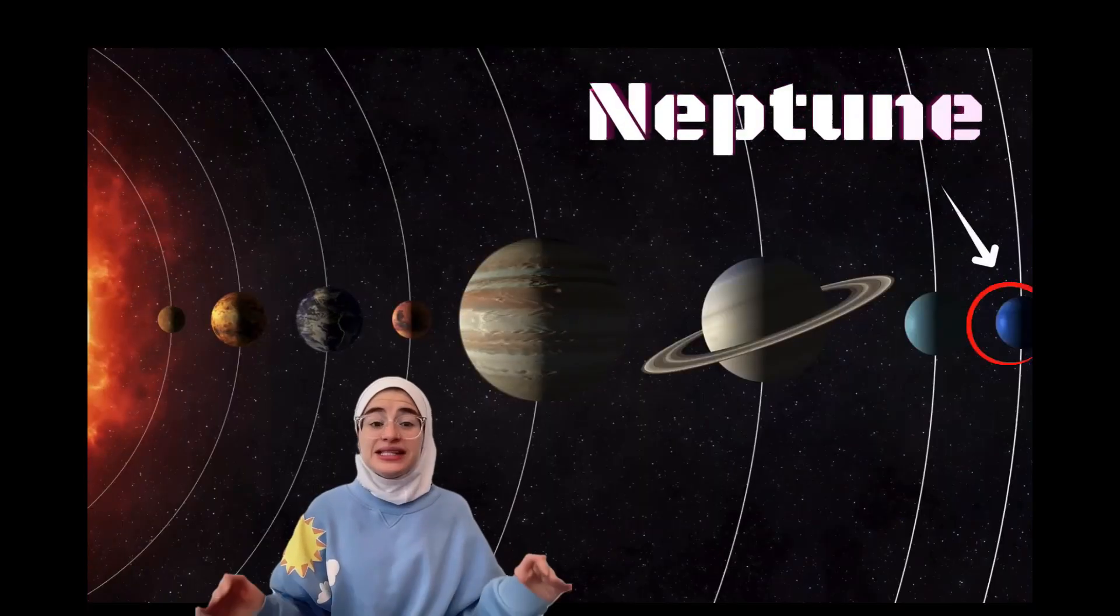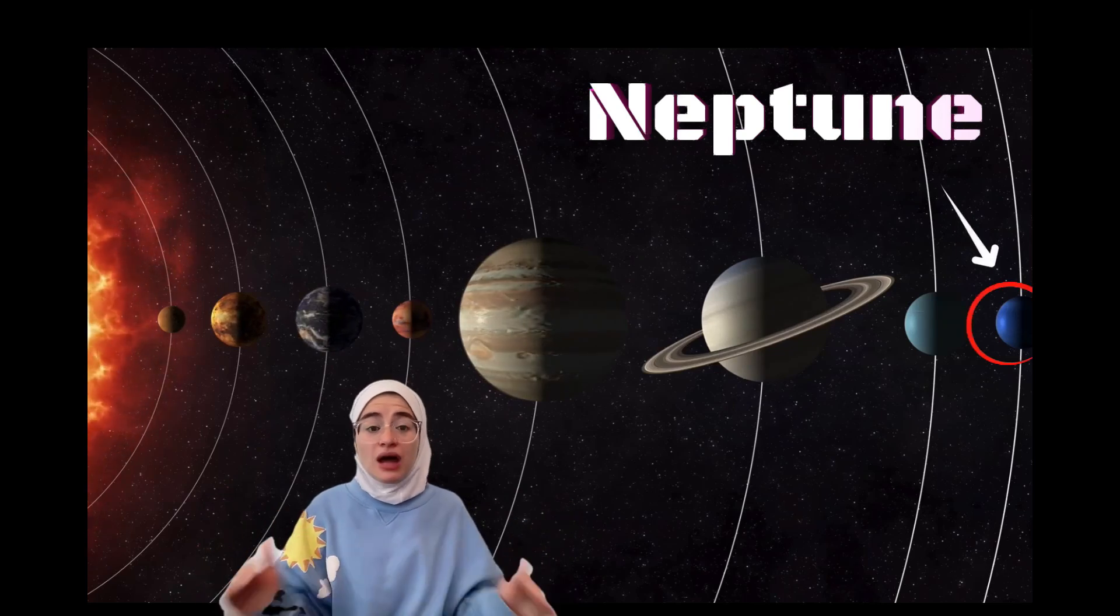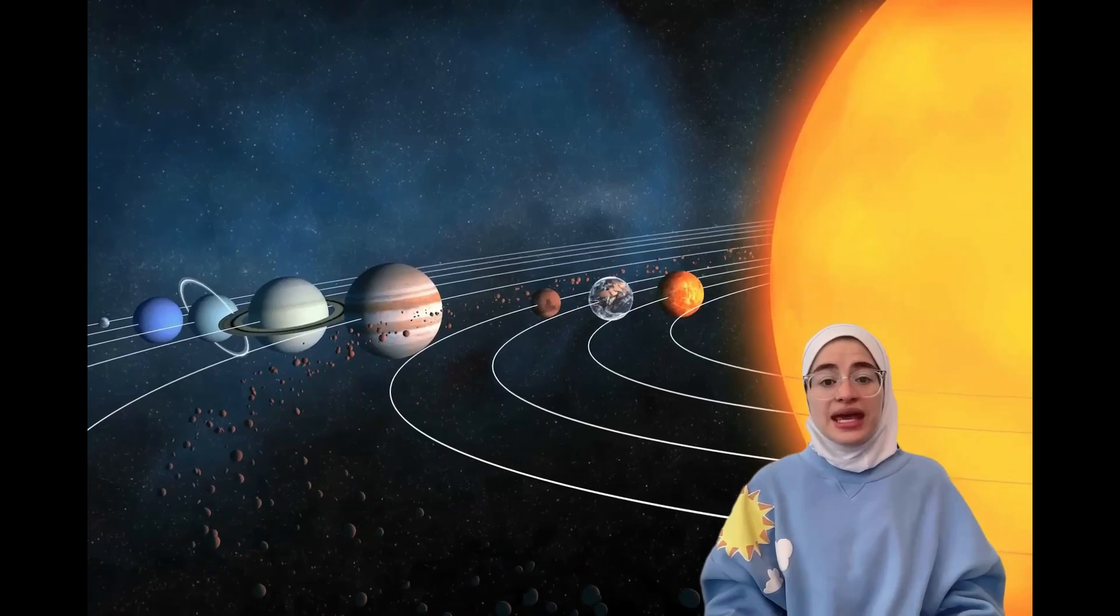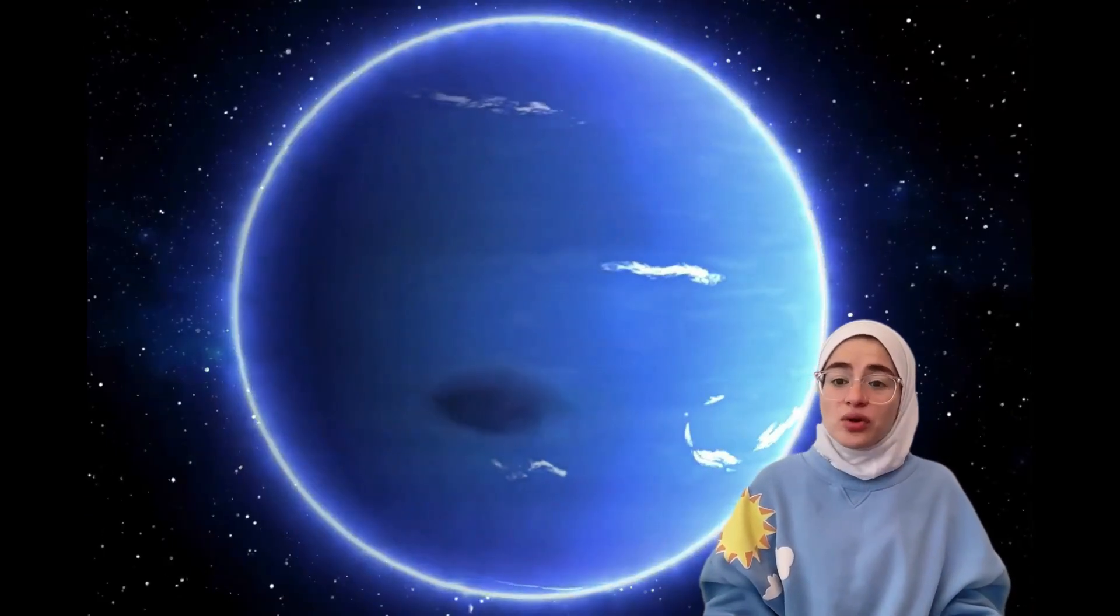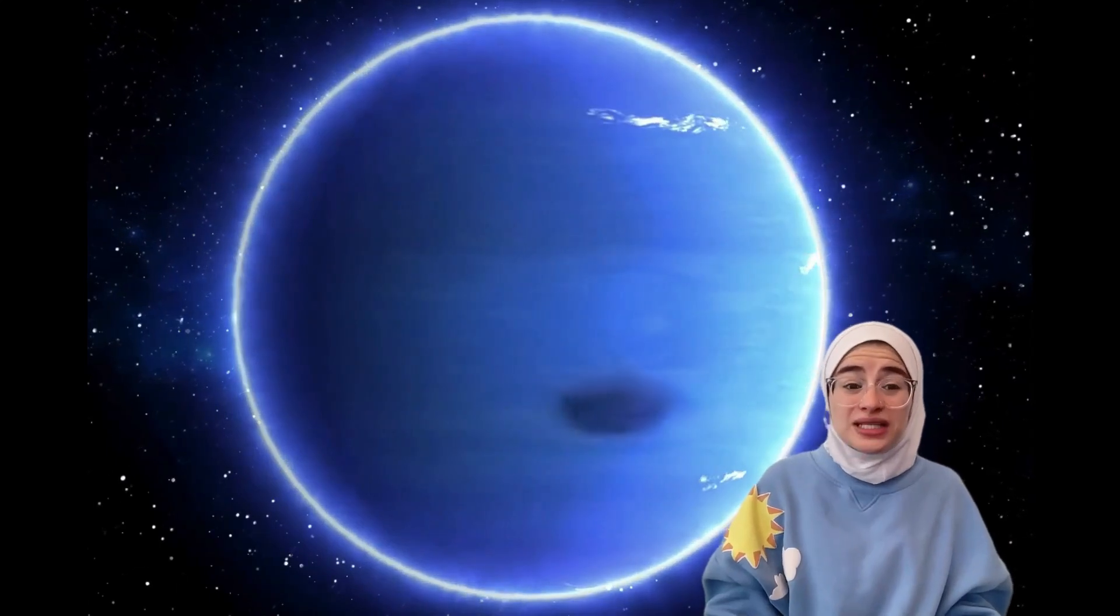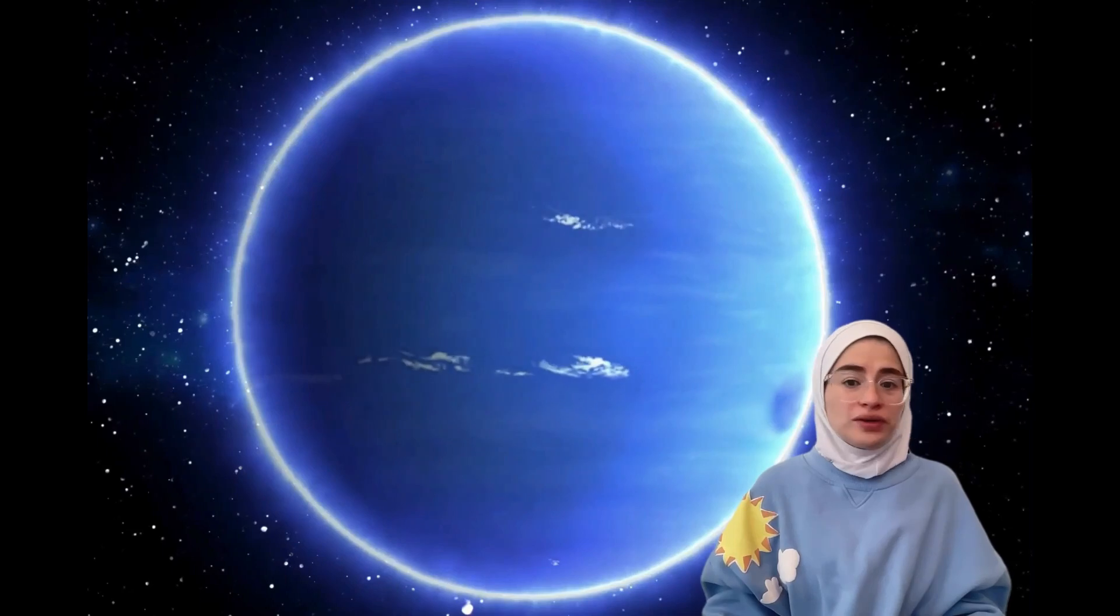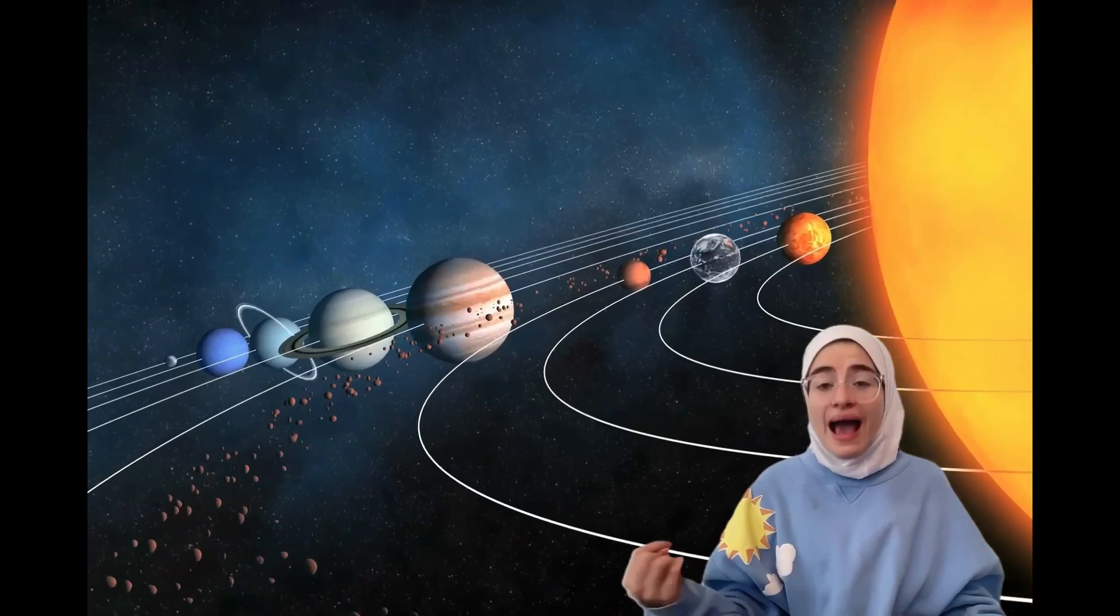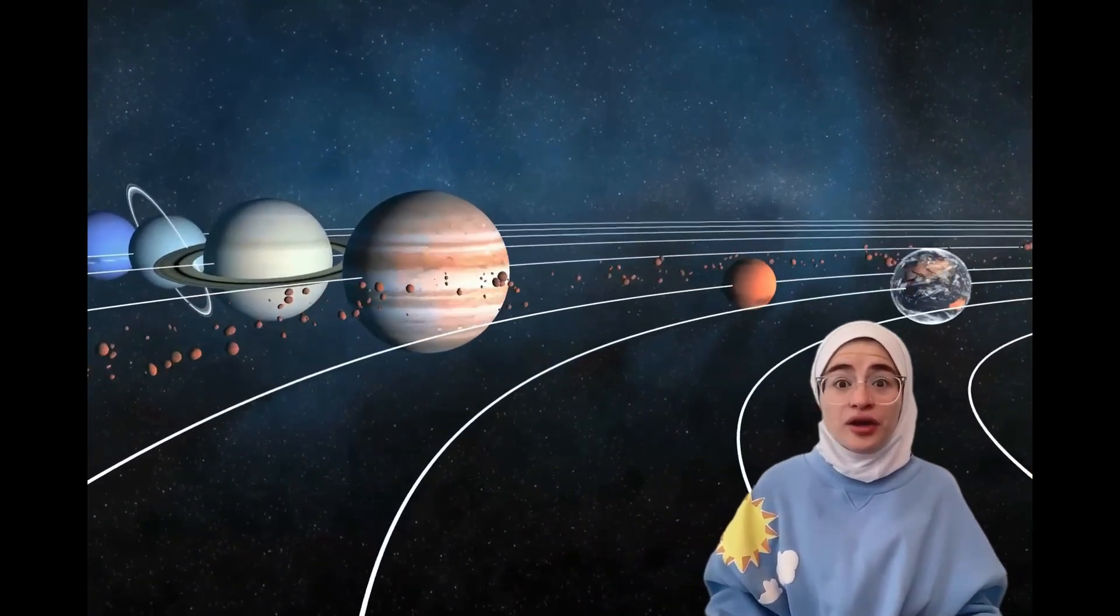Neptune is the eighth planet from the sun. It is a giant planet with lots of gas. Neptune is the last big planet in our solar system. It is like a cold, windy, blue giant. It has big storms, and one is called the Great Dark Spot. A day on Neptune is quick, only 16 hours, but it takes a super long time for it to go around the sun, about 165 years on Earth.